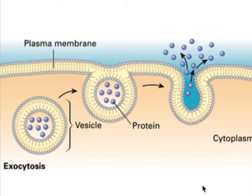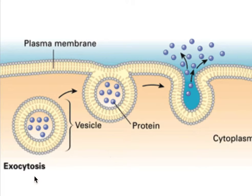The next mechanism is exocytosis. Just as material can be brought into the cell by invagination and formation of vesicles, similarly the cell's waste material — generated by various chemical reactions taking place inside — or the cell's secretion of proteins or hormones, these molecules can be extruded out into the surroundings by fusion of the vesicle membrane with the plasma membrane, and this process is called exocytosis. The undigested waste-containing vacuole or secretory vesicles move from the interior of the cell towards the surface, where the vesicle membrane contacts and fuses with the plasma membrane and discharges its material out of the cell.